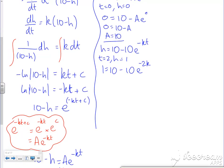So 1 = 10 - 10e^(-2k). Rearranging: 10e^(-2k) = 9, so e^(-2k) = 0.9. Taking logs of both sides: -2k = ln(0.9). Now ln(0.9) is negative, so k = -½ln(0.9).